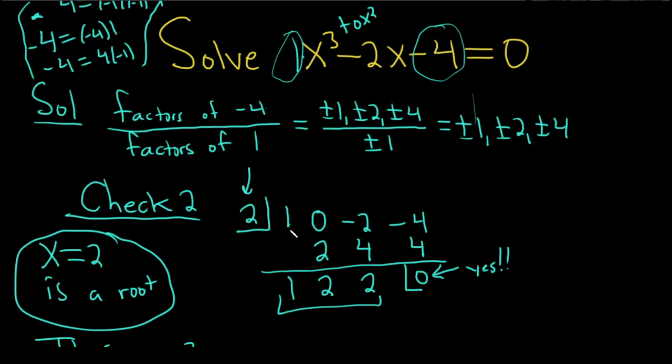To start the synthetic division process, you bring this one down. And then just, I always think of like a bouncing ball. 1 times 2 is 2. 0 plus 2 is 2. 2 times 2 is 4. Negative 2 plus 4 is 2. 2 times 2 is 4. Negative 4 plus 4 is 0. We can rejoice, because whenever this happens, you know you have a solution to your equation. So x equals 2 is a root, also called a solution.